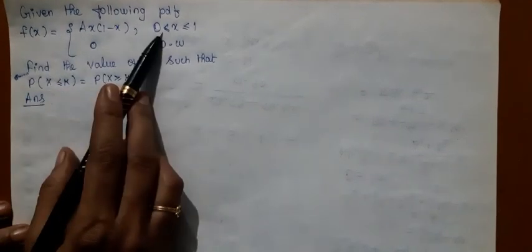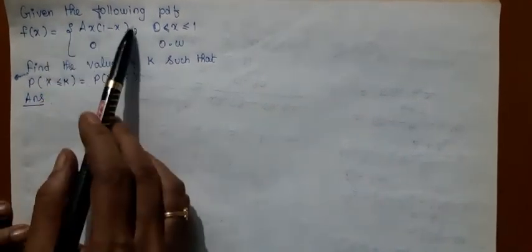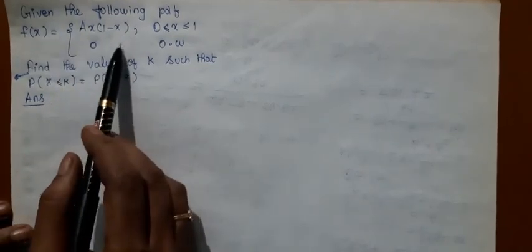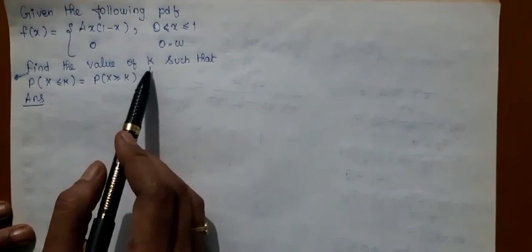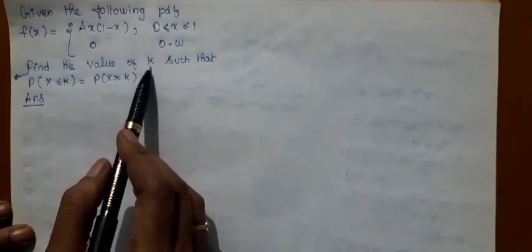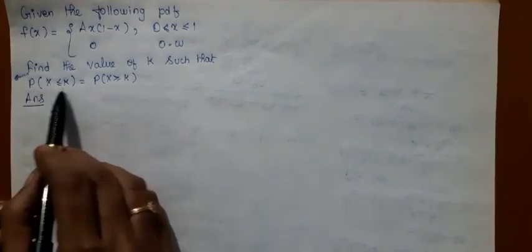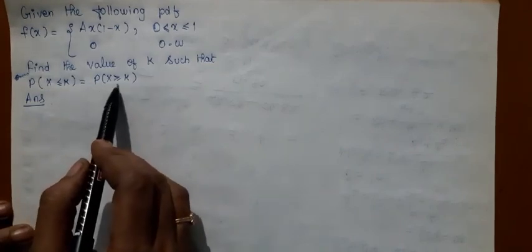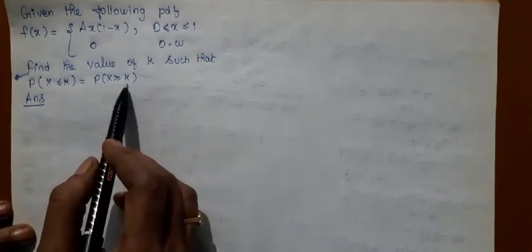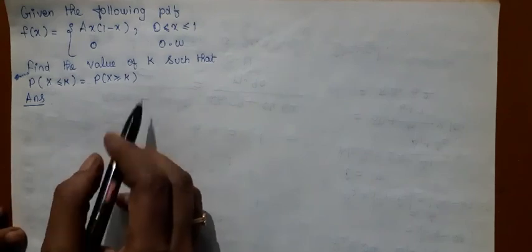Let us consider this problem. It is given that this is a PDF. You are supposed to find the constant value K such that the probability of X less than or equal to K is equal to the probability of X greater than or equal to K. That is, K is the median value.